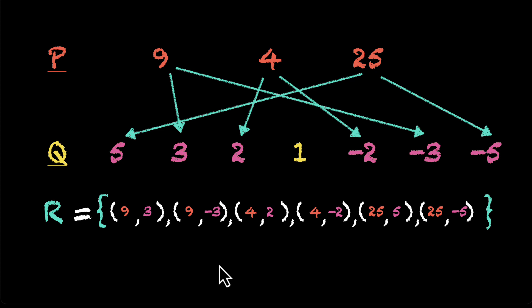Almost there. Now we need to write this in the set builder form. Can we think of the relation here? What's actually connecting these numbers to these numbers? Think about it. So all of these are perfect squares: 9, 4, and 25. And 3 and minus 3, if we square them, we get 9. And for 2 and minus 2, if we square these two, we get 4.